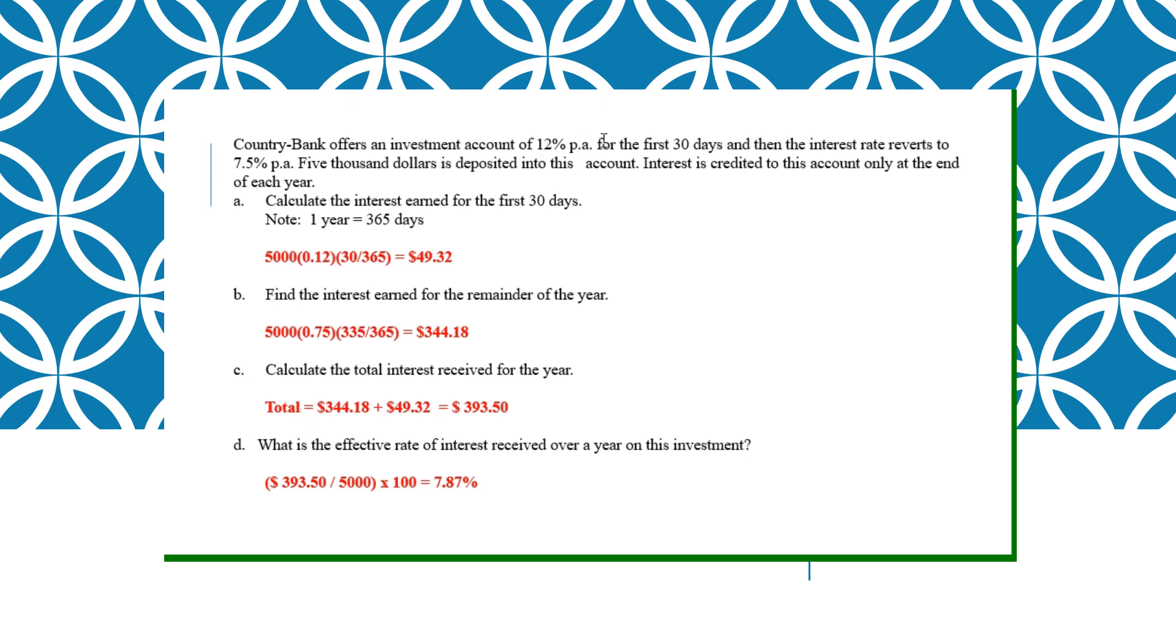This one, 12% PA is per annum, meaning per year for the first 30 days. And then it reverts to 7.5% per annum per year. $5,000 is deposit. So calculate the interest in the first 30 days. So 5,000 times 0.12. They say 365. You follow. You get this. Remainder of the year, 0.075. It will be 335, the balance number of days, 365. This is your value. Calculate the total interest received for the year. You just add both of these up. What is the effective rate of interest? The fastest way to do this is put the interest over principal times 100. Effective rate of interest is not your interest rate. It's different. Effective rate is like a prorated rate for the year. So you just take the interest you earn. So you use this way, the answer will be slightly different by 0.01, but it's fine.